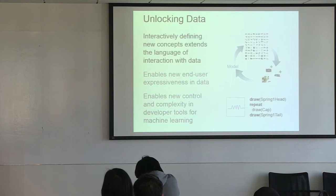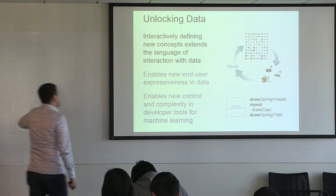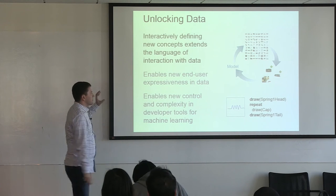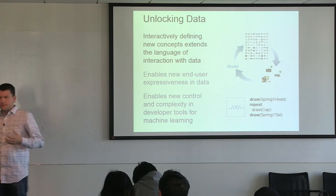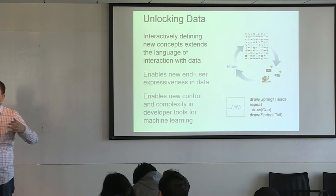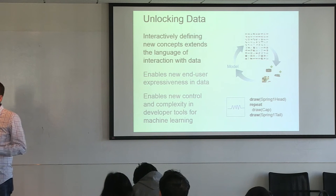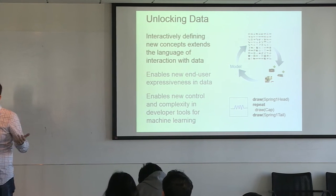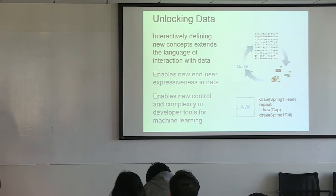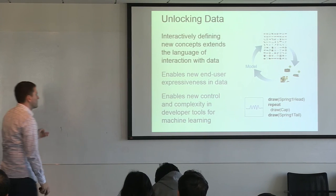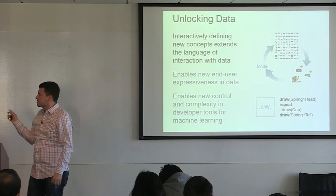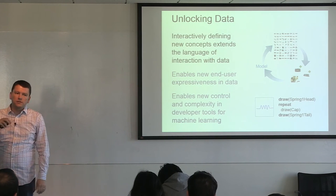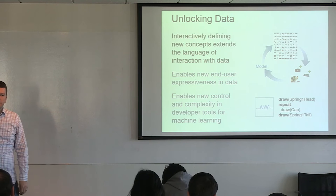GestureScript, and both these systems together, illustrate the idea of interactive machine learning as giving us a language for interacting with data for which we otherwise lack that language. What do you say over a set of images? What do you call parts of an ink stroke? This enables new kinds of expressiveness for end users and can give developers new control in applications that involve machine learning elements.